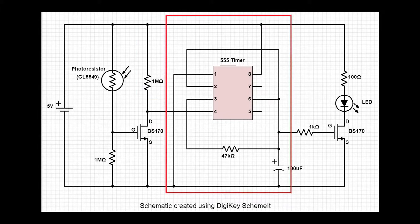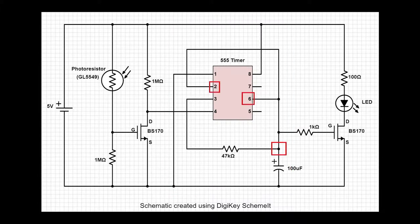In the middle part, we have the 555 timer in astable mode. How it works is that pin 2 and pin 6 constantly monitors the voltage of the capacitor. If the voltage drops below one third of the input, the voltage at pin 3 will go high and start to charge the capacitor through this 47 kiloohm resistor.